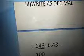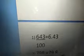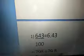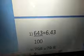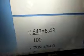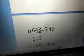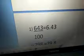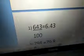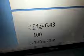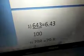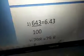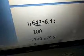Our third heading: write as decimal. First problem: 643 divided by 100. The same method only. Here I have 2 zeros. So I need to place the decimal point after 2 digits. So 1, 2 — after the 2nd digit, I keep the decimal. But before the decimal, here we have a number, so we don't need to add 0. Our answer: 6.43.